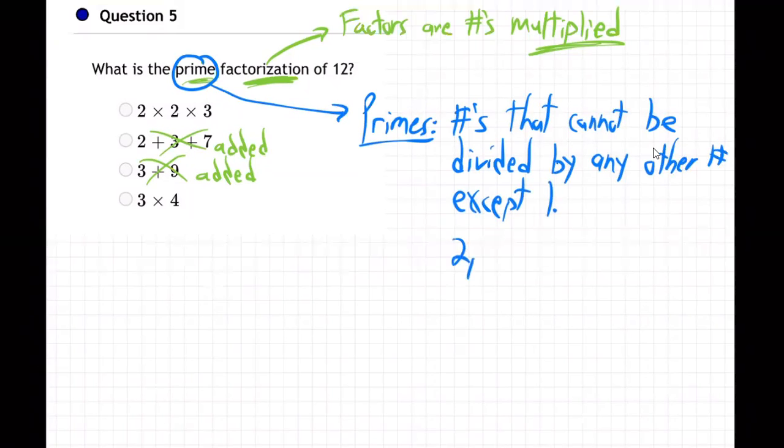So that'd be like 2 and 3 and 5 and 7 and 11. Those are prime numbers. Why did I skip 4, for example? Why is 4 not a prime? Why did I skip 6? Six is not a prime. Eight is not a prime. Why not?